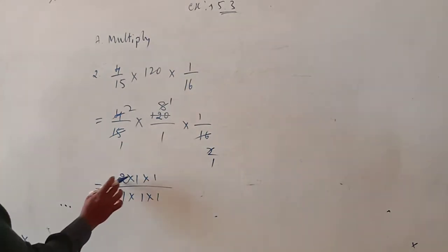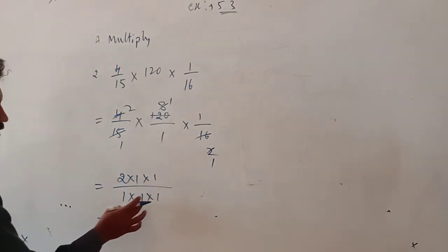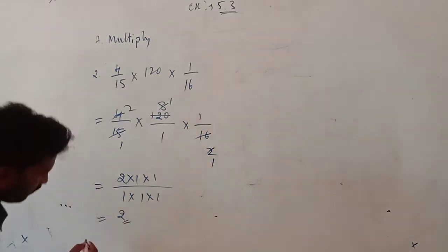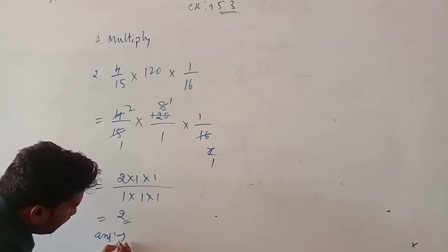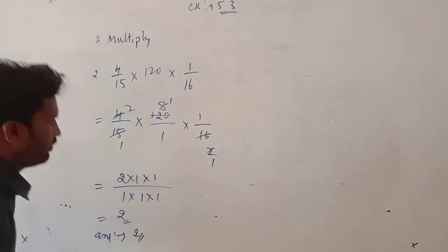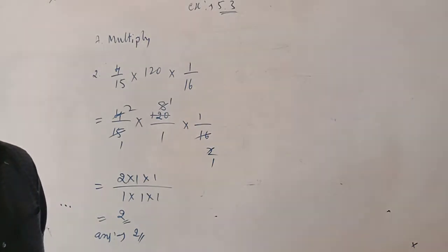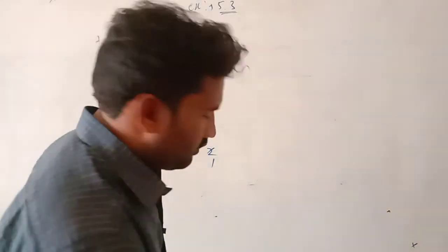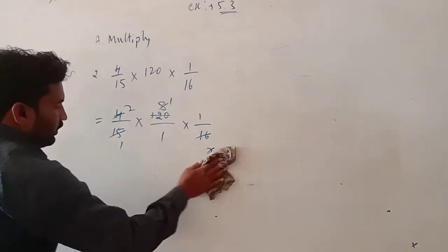So 2 ones are 2, ones are 1. So the answer is 2. If you want to write it, if there is no denominator to write, keep it. Its answer is 2. Now the third one is for homework. So in part B, the third one is for homework.